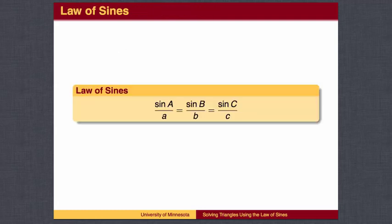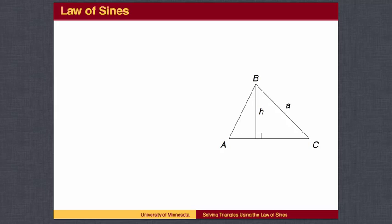The Law of Sines gives a relationship between the measures of two angles of a triangle and the lengths of the sides opposite them. The Law of Sines applies to any triangle, not just right triangles. In this case, triangle ABC is not necessarily a right triangle.